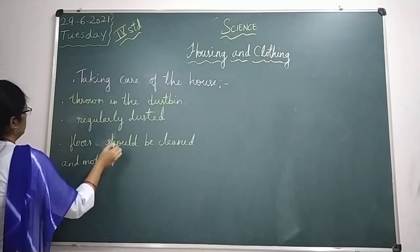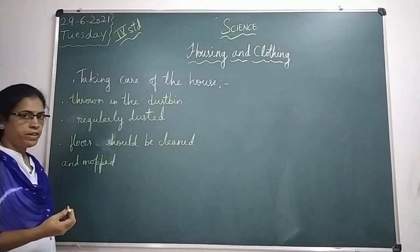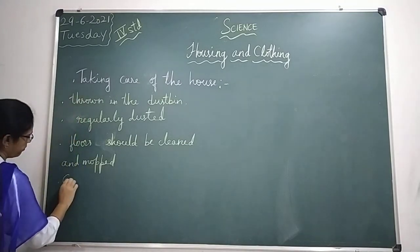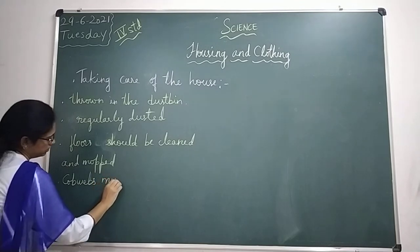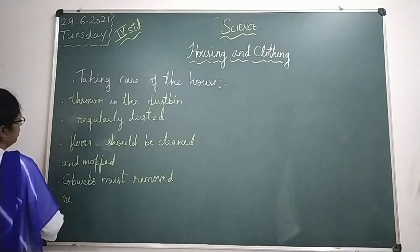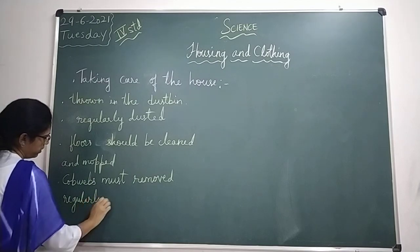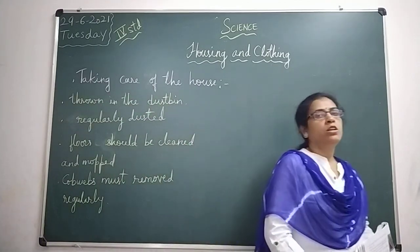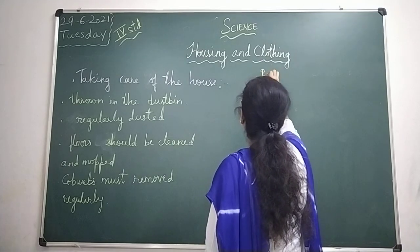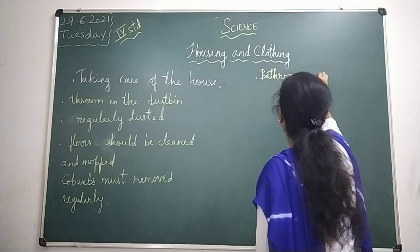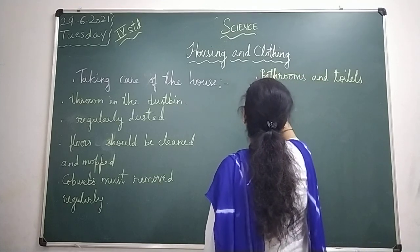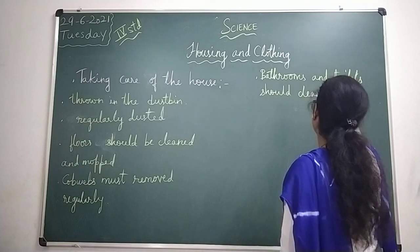The fourth point: cobwebs must be removed regularly. The fifth point: bathrooms and toilets should be cleaned regularly.